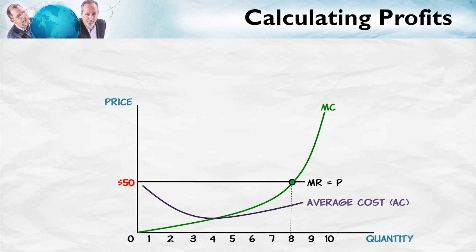A couple of other points to notice: the marginal cost curve goes through the minimum point of the average cost curve. That's just a mathematical fact, but let me give you some intuition. Instead of cost, think about average grade and marginal grade. Suppose your average grade is 80% — you're doing really well. But then on your next test you only get 60%, lower. What does that do to your average? It drives your average down. Indeed, whenever your marginal is below your average, the average must be falling.